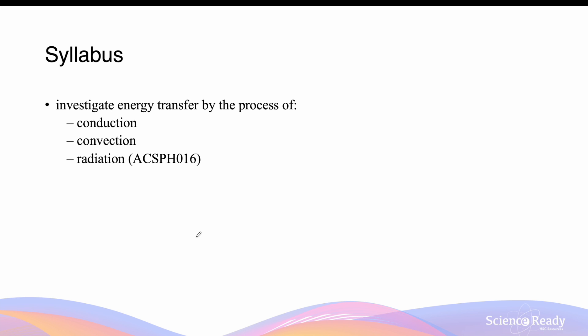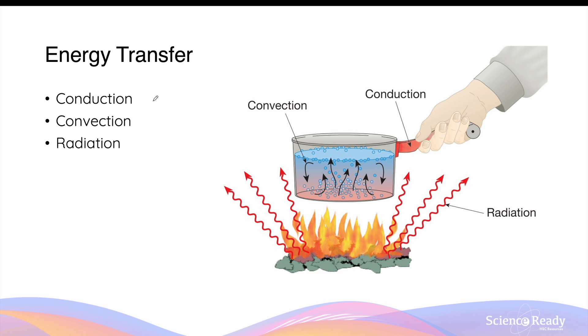This video is on the modes of heat transfer. We define heat as the transfer of energy from a system with a higher temperature to a system of lower temperature. In this video we'll explain the three main mechanisms through which heat can be transferred between systems. We'll look at conduction, convection, and radiation, and by the end you should be able to identify and explain each of the three mechanisms.